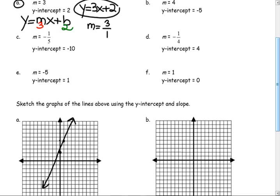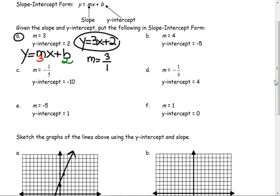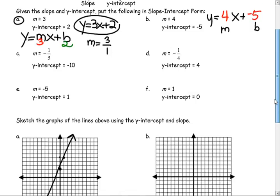You get better lines if you do more points. Should we do b? If we don't finish today, no problem — we'll work on it more tomorrow. So what's the equation here? y equals something times x plus something. Josh, what am I going to put in for the slope? It should be the easy part. 4. And what's the y-intercept? Negative 5. Very good.